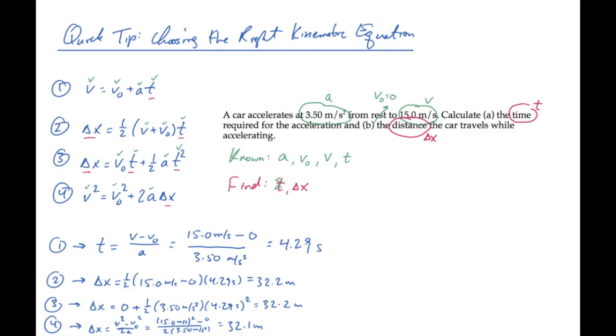Identify then the quantities you're trying to find, and look at each kinematic equation to find at least one that has only one unknown in it. You can solve for that unknown.